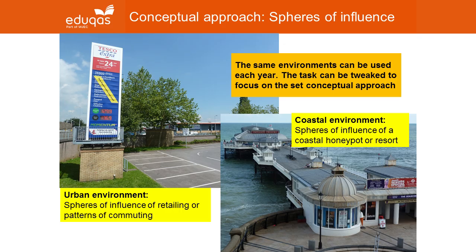This will at least cut down on risk assessment and logistical planning. So in this slide and the two that follow, we can see how the same two locations could be used in each cycle. On this slide, in the year that spheres of influence is the conceptual approach, you can see that an urban environment and coastal environment could be used.